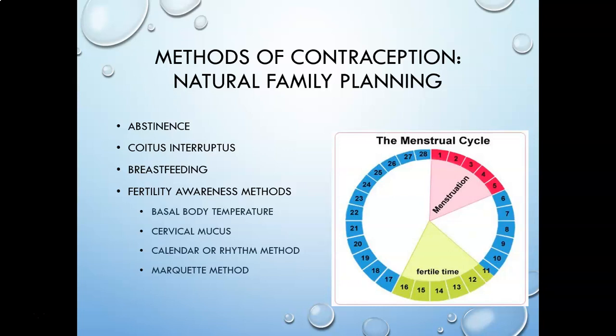Breastfeeding is not truly a method of contraception — it is your body's natural way of decreasing the risk of pregnancy. However, for breastfeeding to be effective: the baby has to be under six months of age, the mother must not have had a period since birth, and they must breastfeed around the clock every two to three hours. If the baby suddenly sleeps five hours one night, it's no longer effective. Even women who do this properly can still get pregnant, so it should never be condoned as a true contraceptive method.